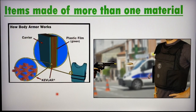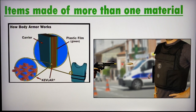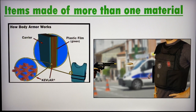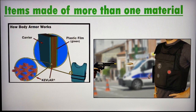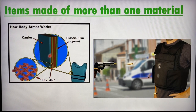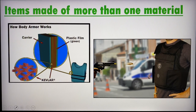Let me bring your attention to more interesting objects I found online. This is Kevlar, a body armor that protects security forces, police, and others who require protection on their jobs from gunshots or even knife or dagger attacks. This is actually a combination of metal and fabrics — a good example of how items are made of more than one material.